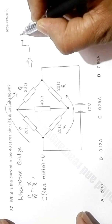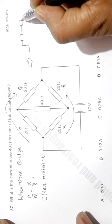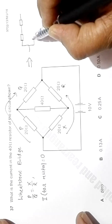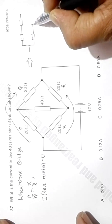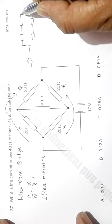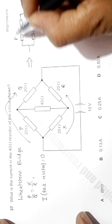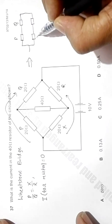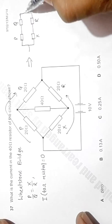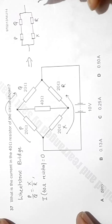This is P, this is Q, X, R where all of them are equal to 20 ohms. So this is 20, 20, 20 and 20.